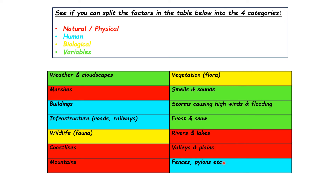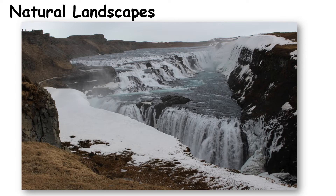Next we've got biological features, which is flora — our vegetation — and fauna, the wildlife within the landscape. And then finally we've got the variables, the things that change from day to day. One day you might have frost and snow, another day there could be a storm. The smells and sounds of the area and the weather continually changing from day to day.